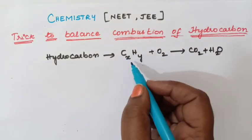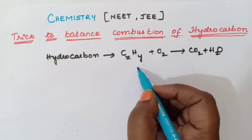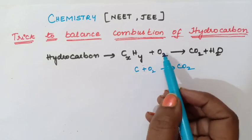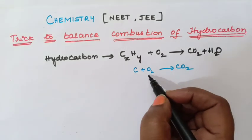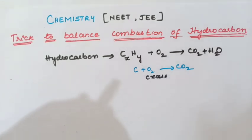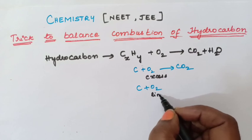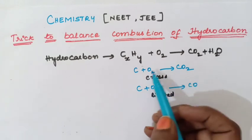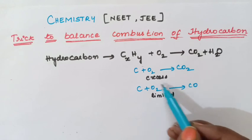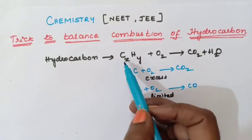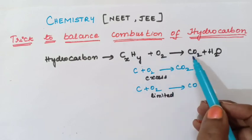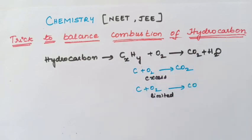When a hydrocarbon is burnt in excess of oxygen, carbon gives carbon dioxide. If carbon is burnt in a limited supply of oxygen, the product will be carbon monoxide — remember that. In excess oxygen: carbon dioxide; in limited oxygen: carbon monoxide. Here we are assuming we have taken excess of oxygen, so the hydrocarbon gives carbon dioxide and water. This is the meaning of combustion of hydrocarbons.